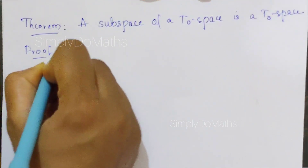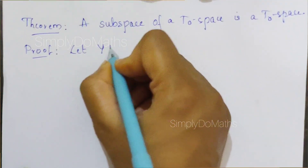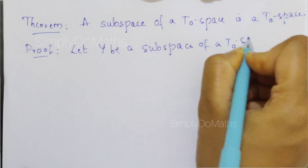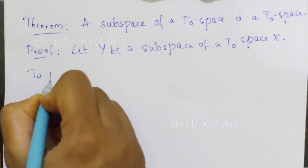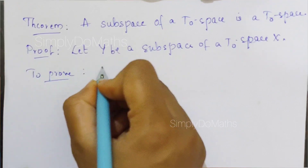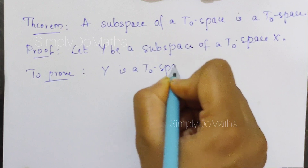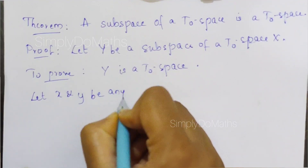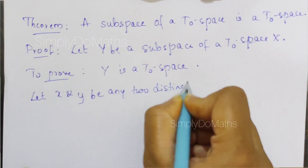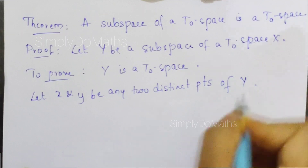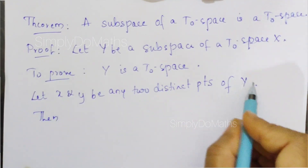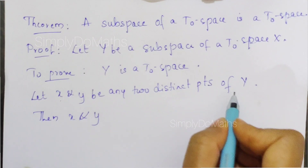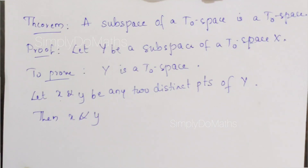Let us prove this. We need to consider a subset — let Y be a subspace or subset of a T0 space X. We need to prove that Y is also a T0 space. For this, let us consider two distinct points x and y in Y. Since Y is a subset of X, x and y belong to Y implies x and y also belong to X, because Y lies inside X.